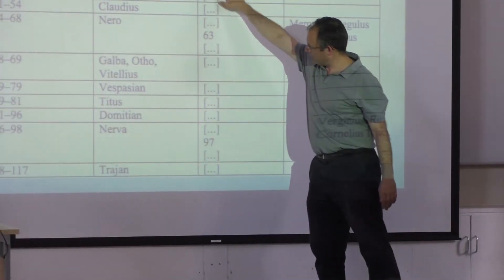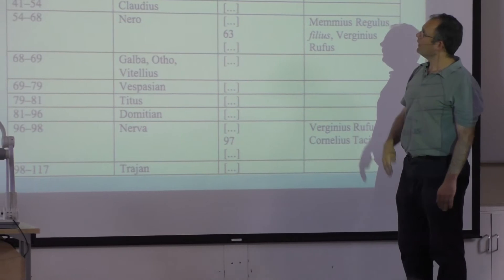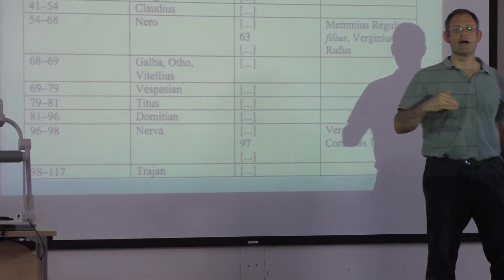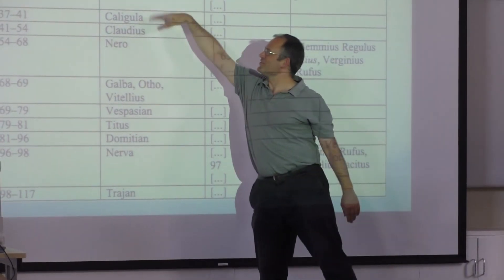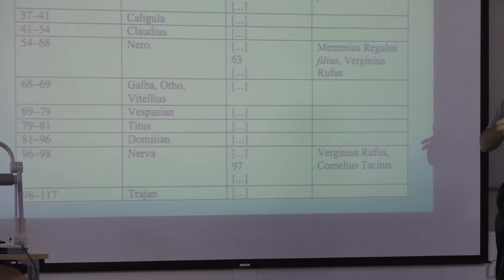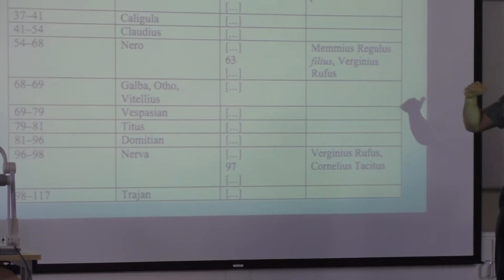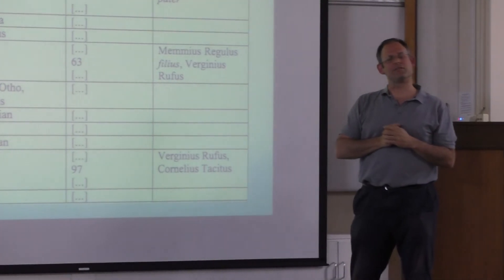He keeps to that sort of annalistic sequence and gives us a year-by-year account that runs across the divisions of the death and succession of emperors. Why do you think he opted for annals?